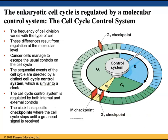So now you've learned the cell cycle: interphase, which is comprised of G1, S, and G2, and mitotic or M phase, which is comprised of prophase, prometaphase, metaphase, anaphase, telophase, and cytokinesis.